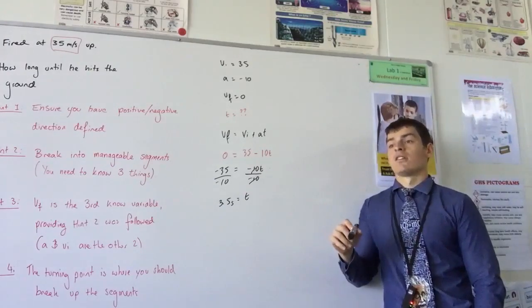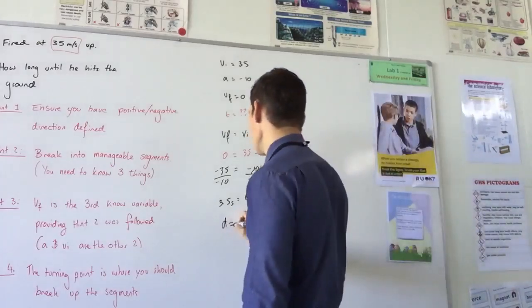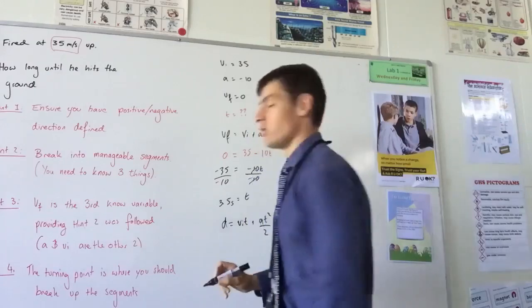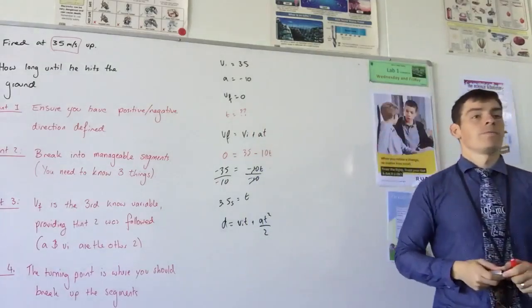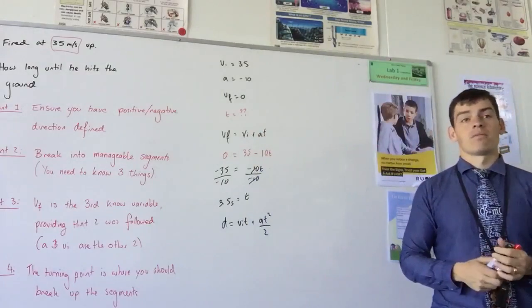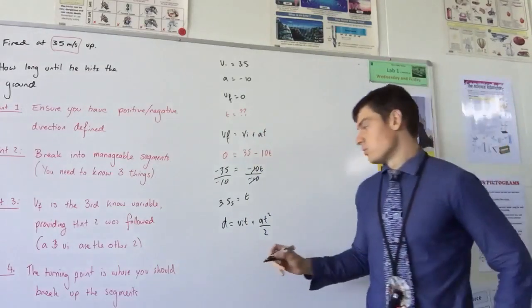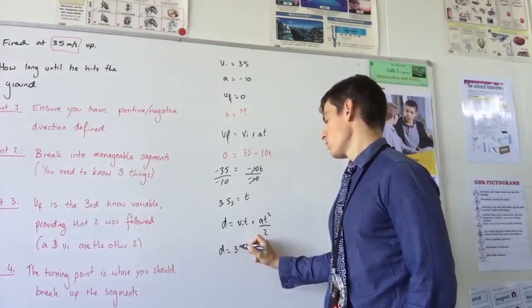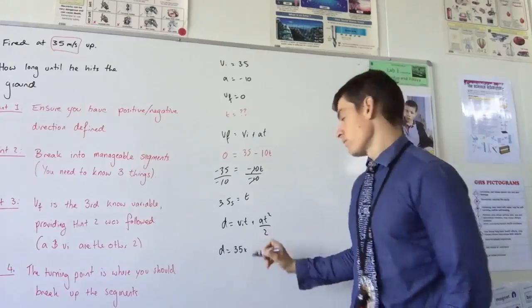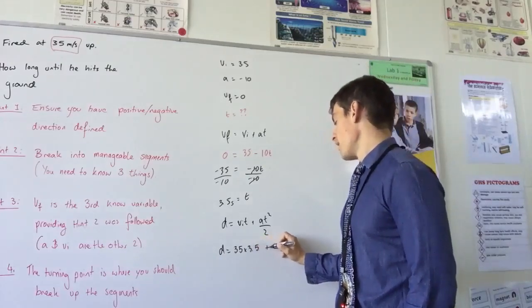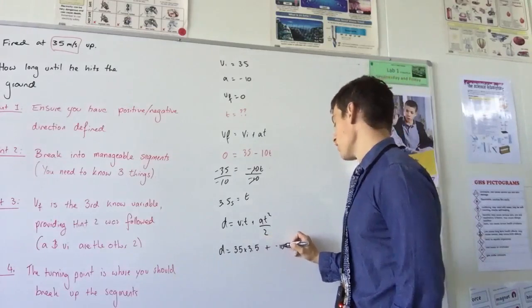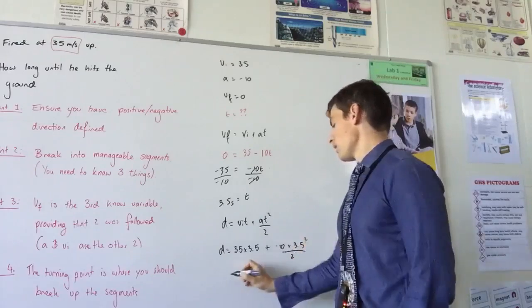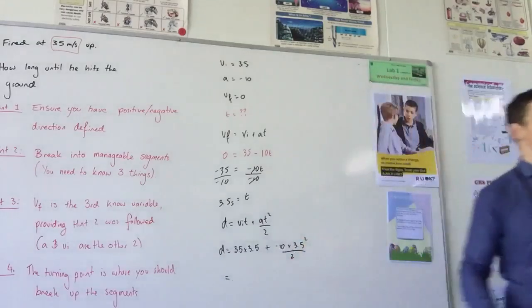We'll use the equation d. Let's pick the equation. So d equals vi*t plus a*t squared divided by 2. Happy with that? So what's vi? 35 times 3.5 plus, very good, negative 10 times 3.5 squared divided by 2. And then you would get your calculator out because I don't expect you to know that off by heart.